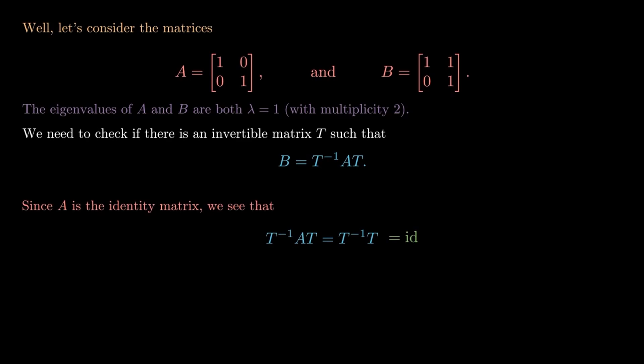So in other words, if a matrix is similar to the identity, it has to be the identity matrix itself. But notice that B is not the identity matrix - B has this one in the top right-hand corner. So A and B can't be similar even though they have the same eigenvalues.